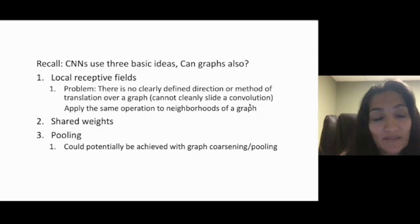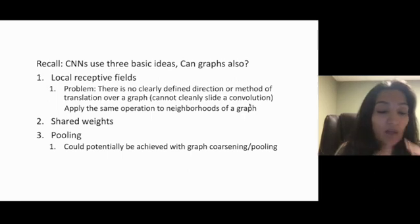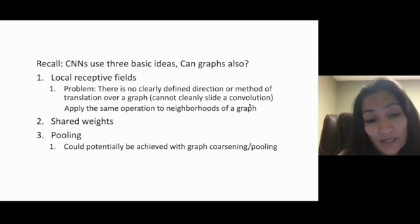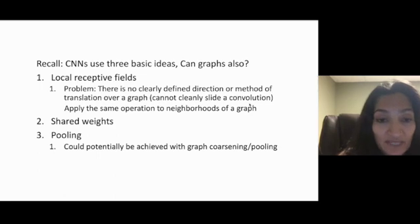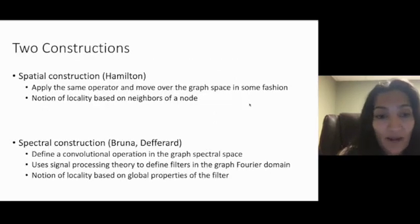Now, once you have these kinds of local receptive fields, then each neuron at the next layer will be looking at a small neighborhood of the previous layer. And so you have a reduction in parameter and shared weights. And then the next operation is pooling. Pooling is a form of summarization. And this can be achieved by graph coarsening or graph pooling, which is similar to the max or sum pooling in regions of an image. But again, it's dependent on neighbors in a graph.